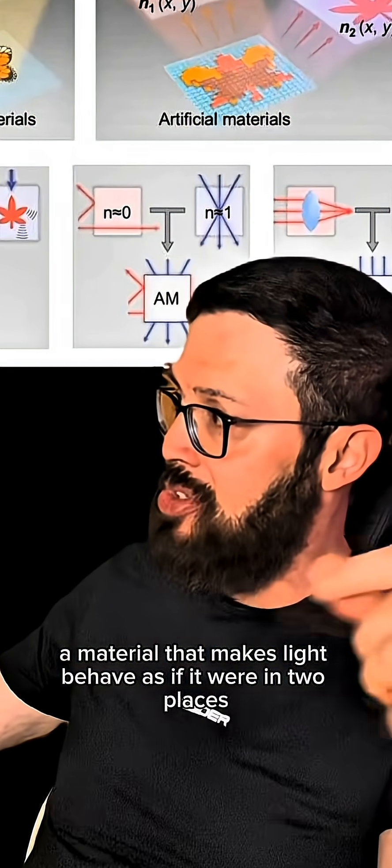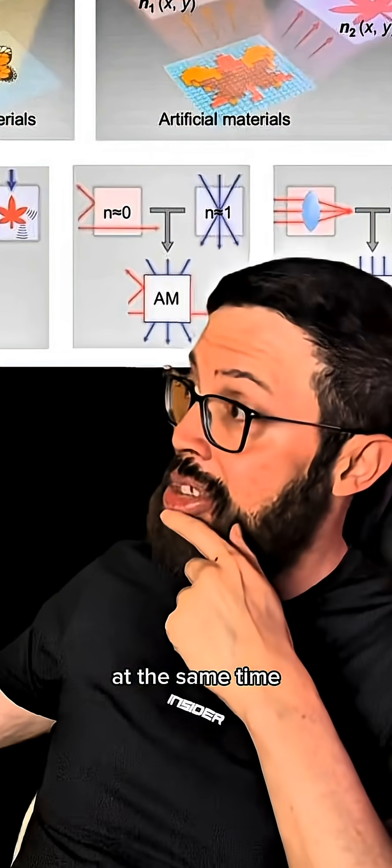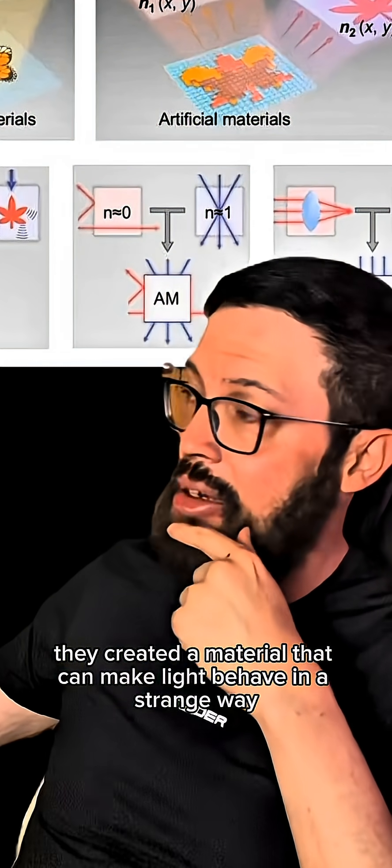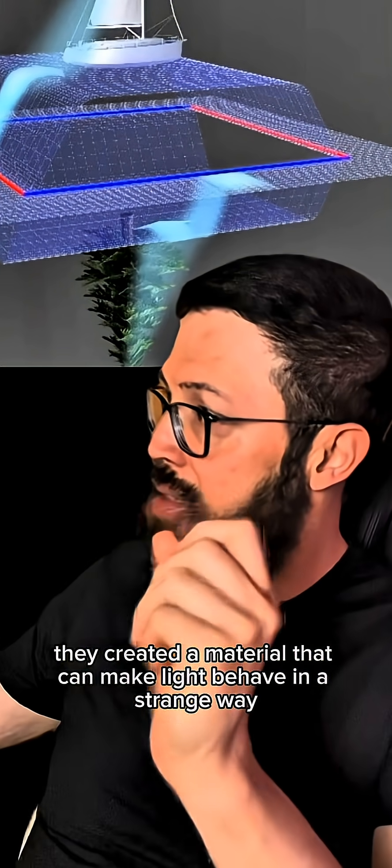A material that makes light behave as if it were in two places at the same time. They created a material that can make light behave in a strange way.